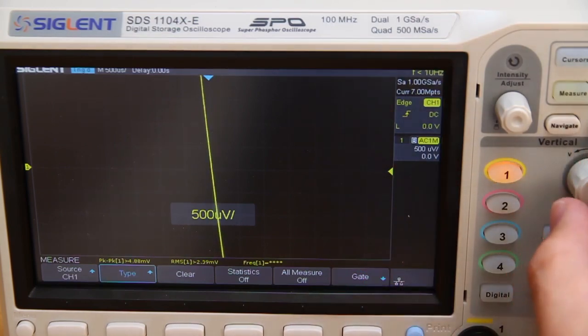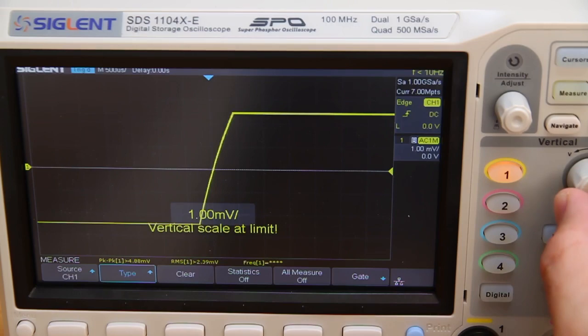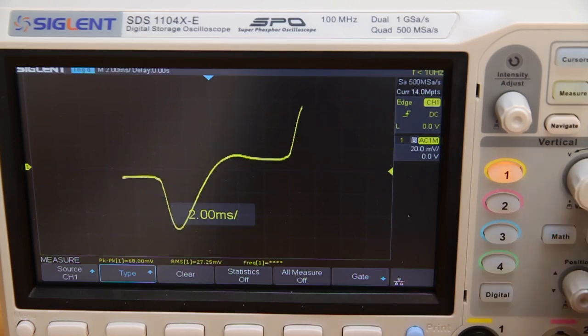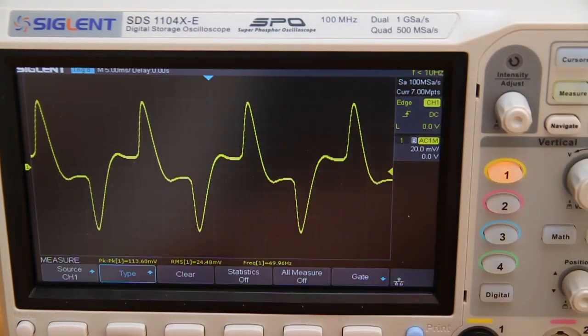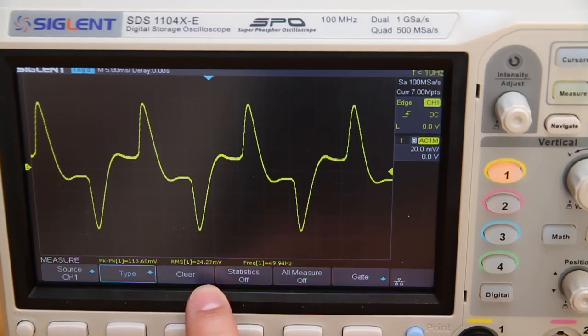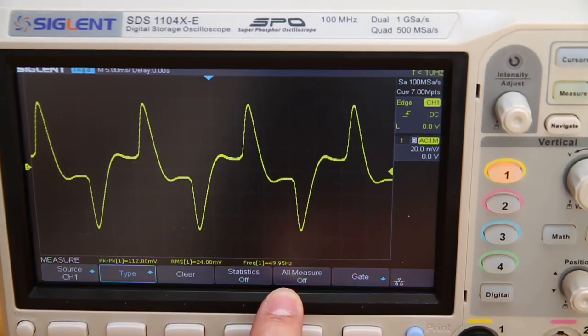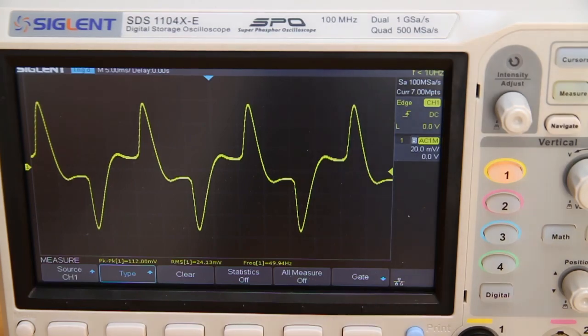I was at the lowest sensitivity at 500 microvolts per division and I think we have to go down a bit. Oh, look at that. What are the values? So peak to peak 130 millivolts, RMS at 24 millivolts, and the frequency is 50 hertz. I mean 130 millivolts peak to peak, that's actually quite bad. I mean, it's a linear power supply. It shouldn't be that bad.